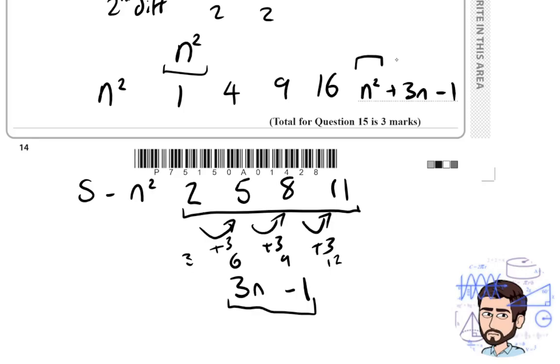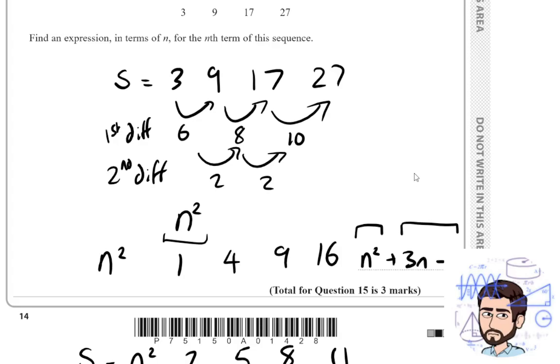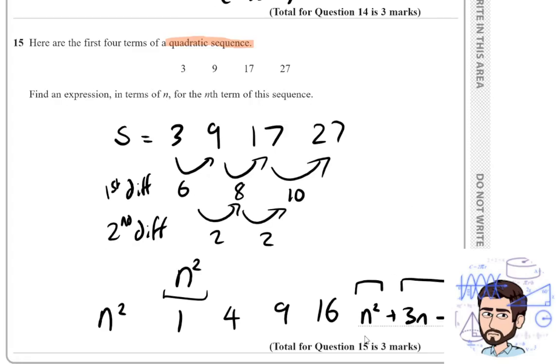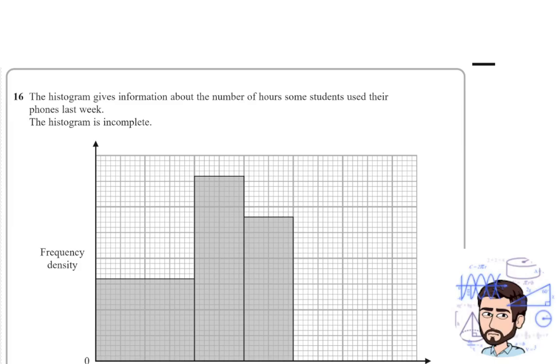This is probably the most difficult type of quadratic sequence that you could be asked, where you've got basically a quadratic and a linear sequence combined into one. But the process is very similar. As long as you follow the process, almost like an algorithm for a computer, then it's the same thing every time. I would highly recommend that with this topic in particular, the more practice is definitely going to be beneficial. I'm going to move on to the next question, which is question 16.